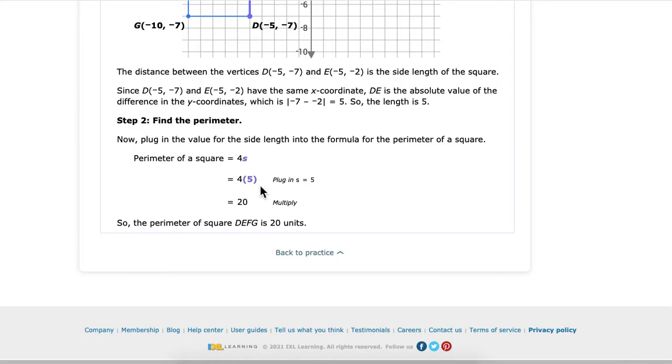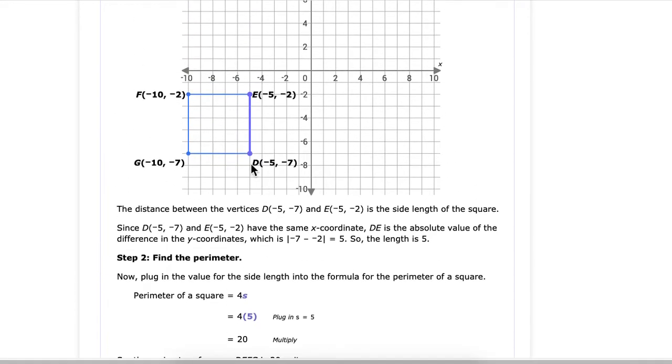Okay, yes, that perimeter is 4 times 5. The other one is how do you find the area. Remember the area, you'll just have to do length times width. That's how you find the area. Okay, well, good luck.